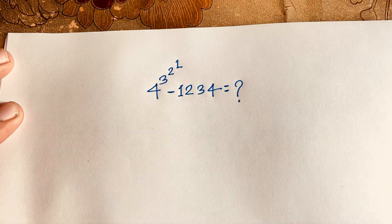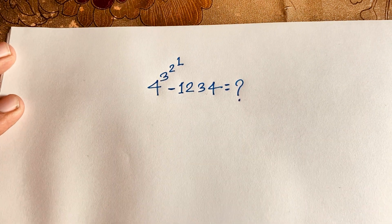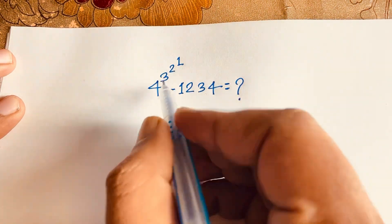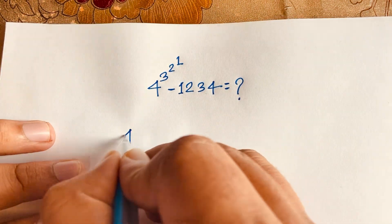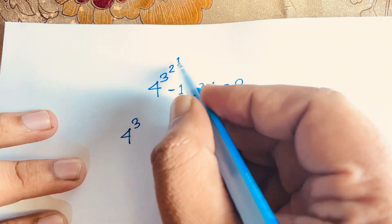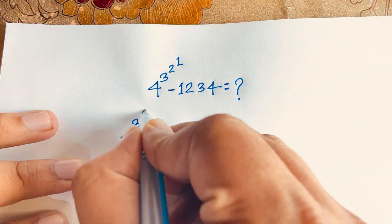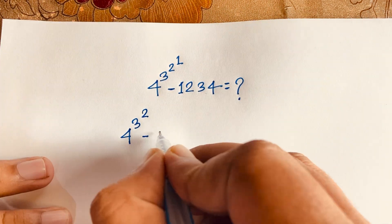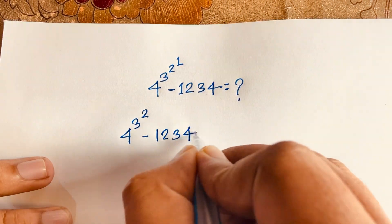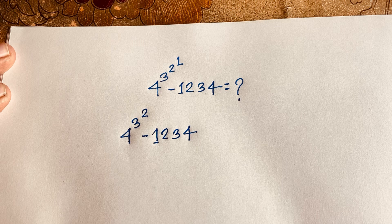Let's start. First I can see here is 4 to the power 3, then 2 to the power 1 — that will be 2. So 2 to the power 1 equals 2, and we have minus 1234.